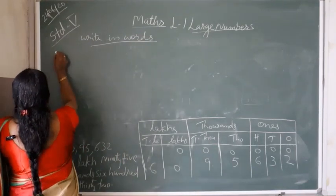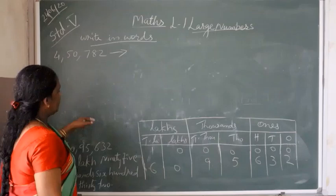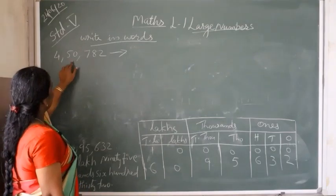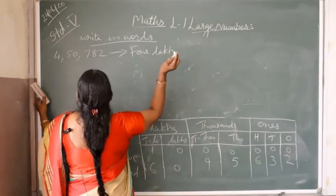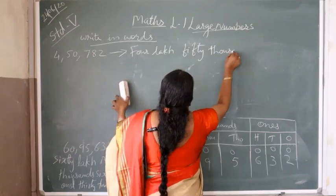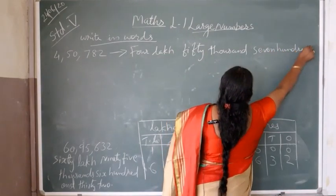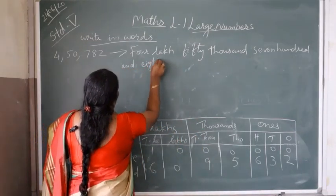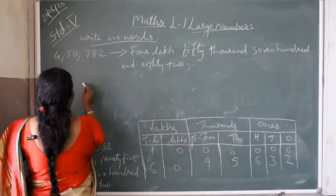Another example — write in words. We separate the number by putting commas: 4,50,782. We read it as four lakhs, fifty thousand, seven hundred and eighty-two.